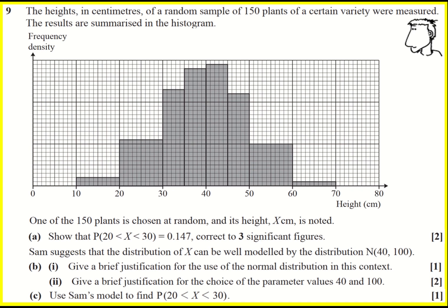We're asked to find the probability that x is between 20 and 30. So essentially this area here divided by the total area, that's what this is referring to. Now we don't have a scale to begin with so we're going to need to make one.